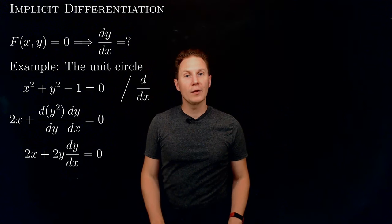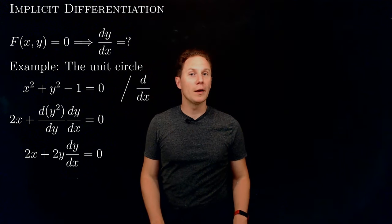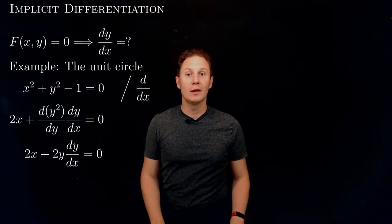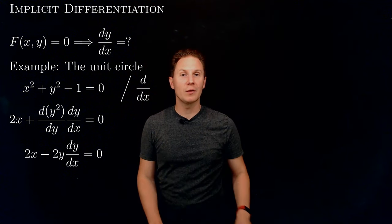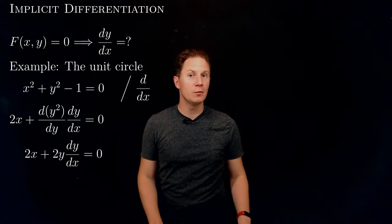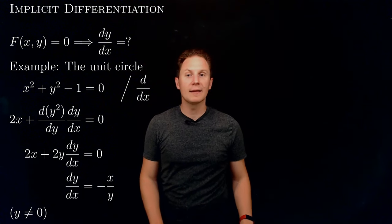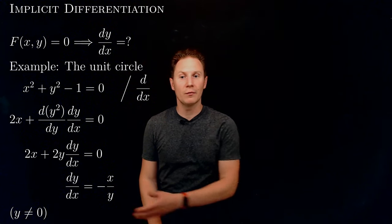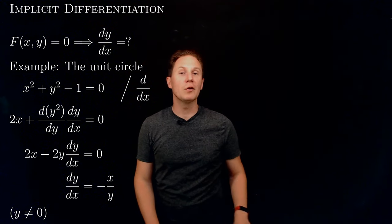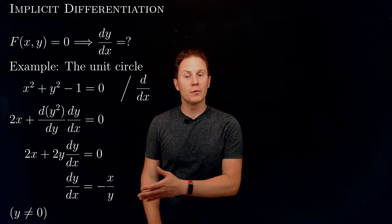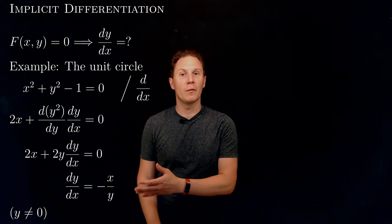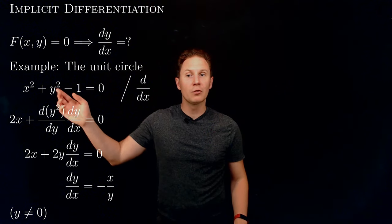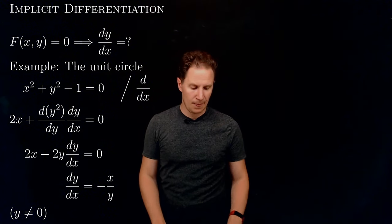This gives us 2x plus 2y multiplied by the derivative of y with respect to x equals 0. Solving for dy/dx, we get dy/dx equals negative x over y, which is valid whenever y is not 0. So notice that we managed to find the derivative of y with respect to x without even solving the original equation for y.